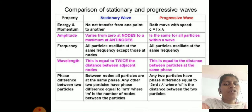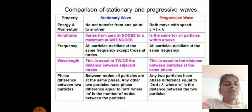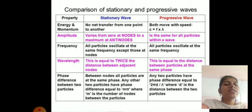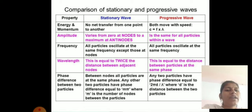Phase difference comparison: in stationary waves, all particles between two nodes are at the same phase; any two particles have a phase difference equal to mπ, where m is the number of nodes between them. In progressive waves, any two particles have a phase difference of 2πd/λ, where d is the distance between the two particles.